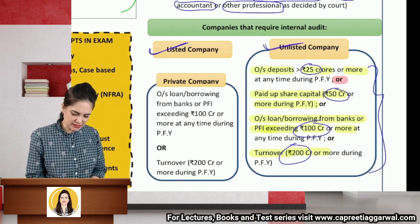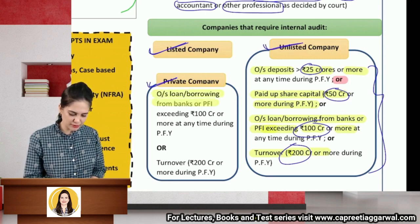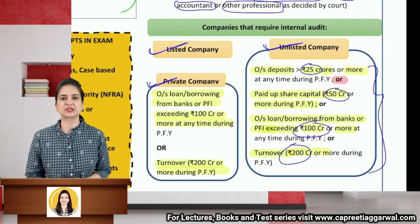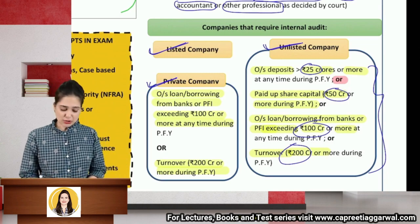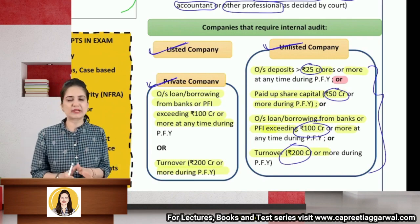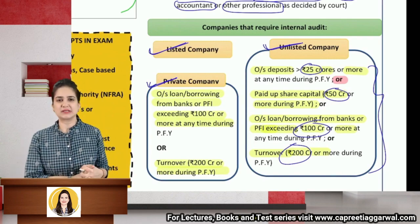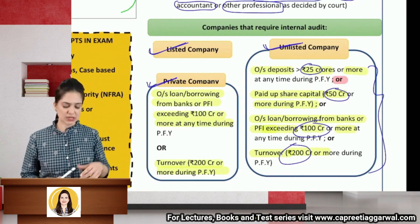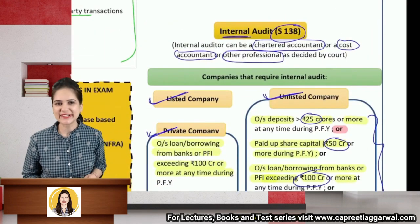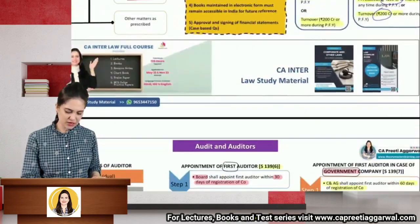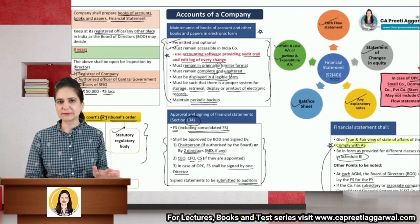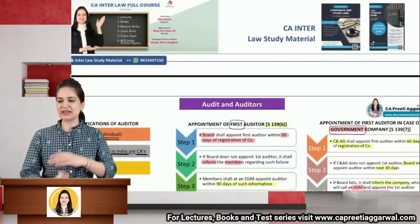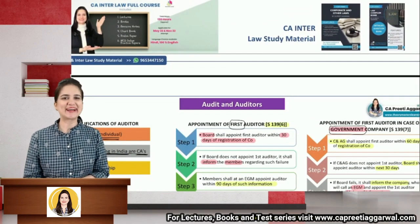In case of a private company, if outstanding loans and borrowings from banks or public financial institutions exceed Rs. 100 crores, or turnover exceeds Rs. 200 crores, if either condition is satisfied, the company has to get internal audit done. Students, these are the requirements you need to memorize. With this, we come to an end of accounts of company. Next, we will discuss audit and auditors.